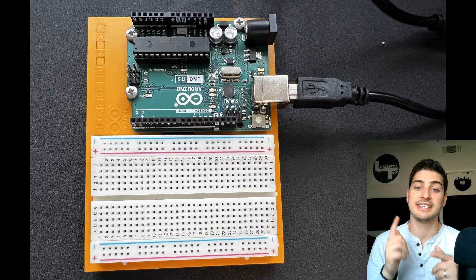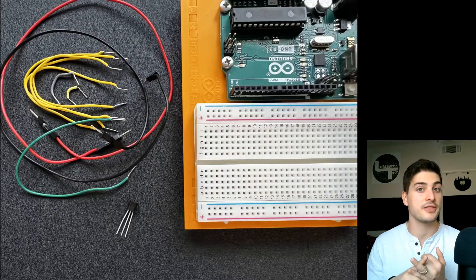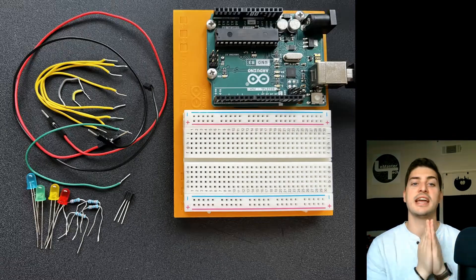This will be our first project reading from a varying range sensor called an analog input. So for this project, in addition to your Arduino and a breadboard, you'll need some jumper wires, a TMP-36 temperature sensor, four 220-ohm resistors, and some LEDs.